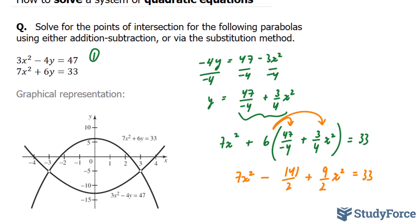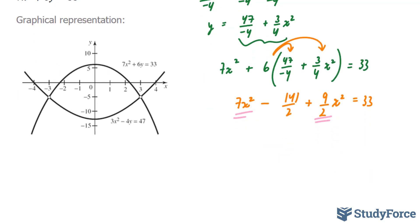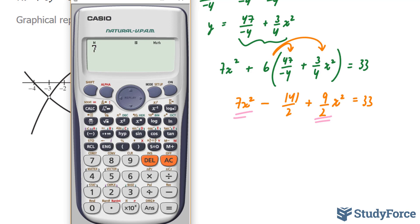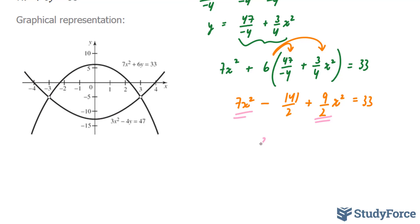7x squared. Next, I need to solve for my x squared here. And to do that, well, these two terms are alike. 7 and 9 over 2 can be combined. Let's use our calculator. 7 plus 9 over 2. And by all means, you can do this by hand. It just takes a little longer. 23 over 2 x squared minus 141 over 2 is equal to 33.